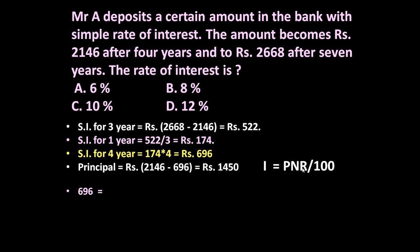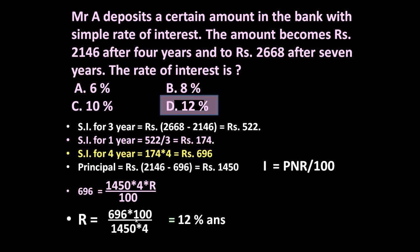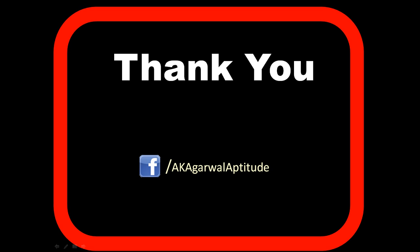N is 4 years because after 4 years the amount becomes 2146, and 696 is the interest in that period, giving principal of 1450. Simplifying the equation: R = 696 × 100 divided by 1450 × 4, which equals 12%. So the answer is 12%. Thank you very much for watching this video. You can also follow me on Facebook.